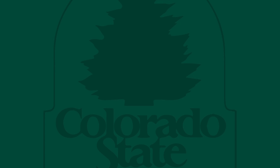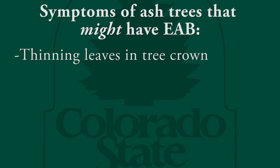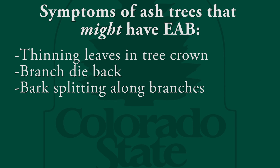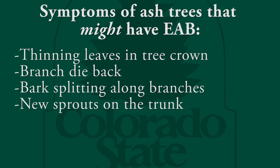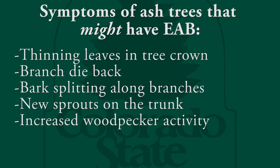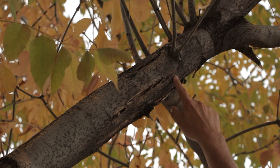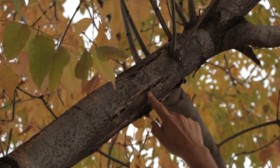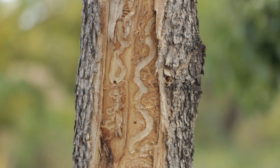To recap, your tree might have emerald ash borer if you see thin leaves at the top or the crown has thinned out, you see individual branch dieback, you see bark splits on some of the branches, or if you see shoots arising from the main portion of the trunk or from the larger branches of the tree, or if you see increased woodpecker activity. You can definitely determine if you have emerald ash borer if you have D-shaped exit holes, and if you have bark splits accompanied with S-shaped galleries under that bark split, or if you just have S-shaped galleries showing on the bark.